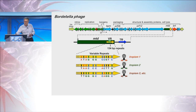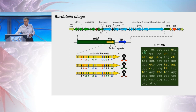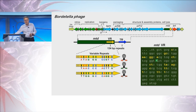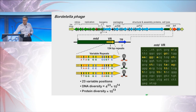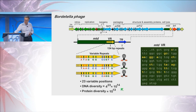This variable region is repeated right downstream in a region that is actually invariant. Looking at what is being diversified at the C-terminus — these are the codons in MTD — the yellow positions, which are diverse, are usually in the first or first two positions of amino acid codons, which maximizes the amino acid diversity. There are 23 of these variable positions; any of the four nucleotides could be inserted. The DNA diversity is about 10^14, and the protein diversity is about 10 trillion polypeptides that can theoretically be generated.